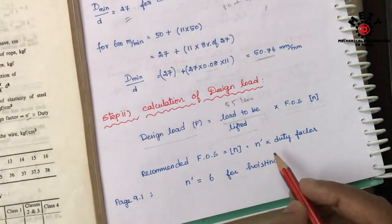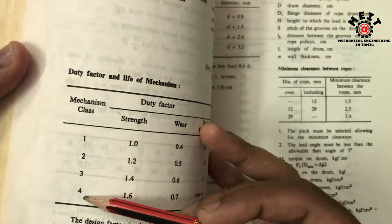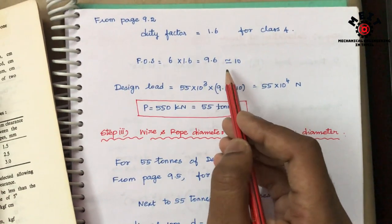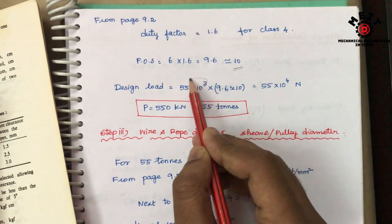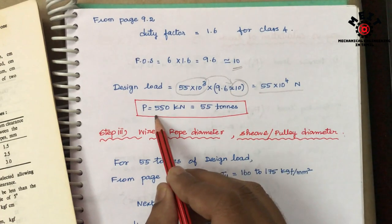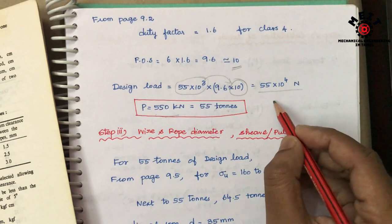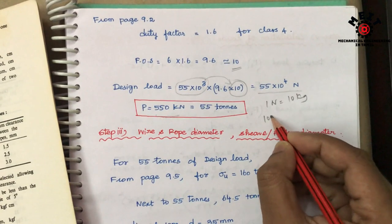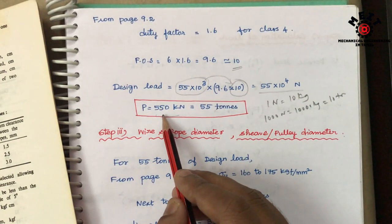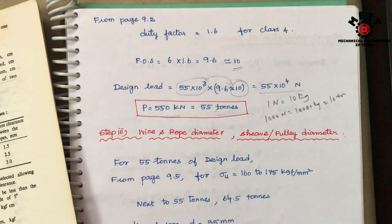The normal factor of safety for Class 4 rope for hoisting purpose is 6. The duty factor from the next page (9.2) for Class 4 is 1.6. So 6 × 1.6 = 9.6, approximately 10. Factor of safety is 10. Therefore design load = 55 kN × 10 = 550 kN = 550,000 N = 55 tons. That is step number 2 complete.